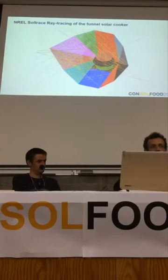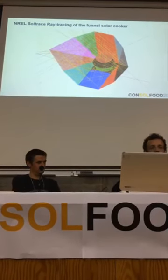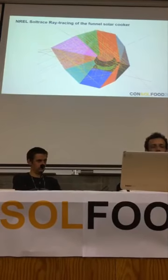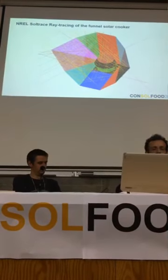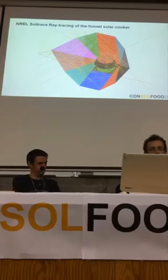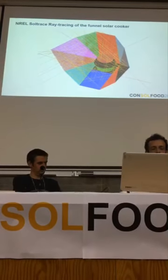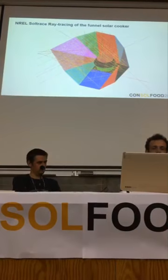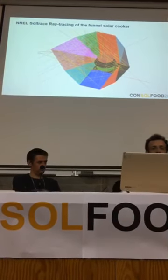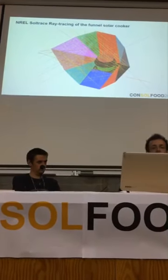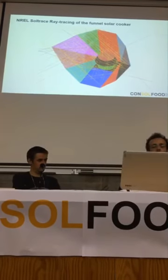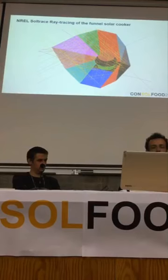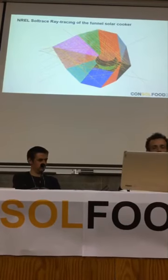You can generate a large number of rays and follow all the interactions with the system. You can follow all the reflections, and you can see how many rays are being absorbed in the different parts of the cooker. In the picture you can see some ray trajectories. The red ones are rays going outside of the cooker because the cooker is not a perfect geometry. Usually the simulations are made with around 10 million rays.